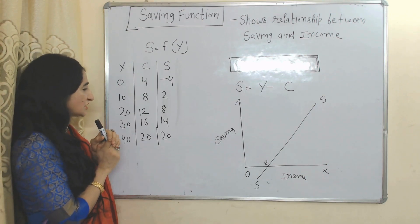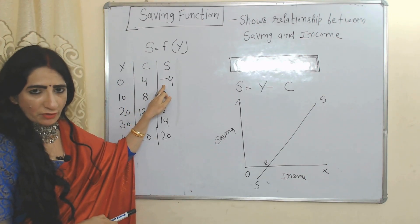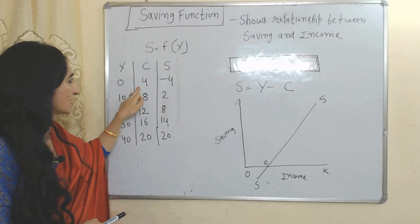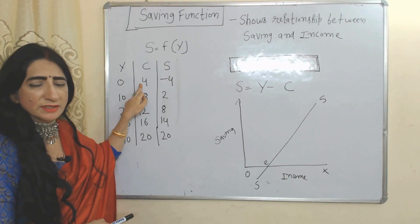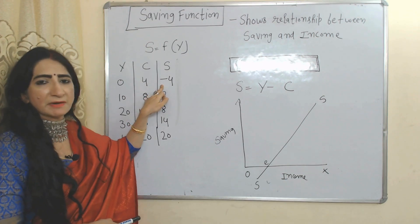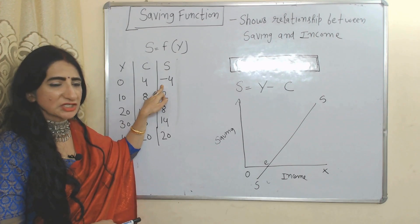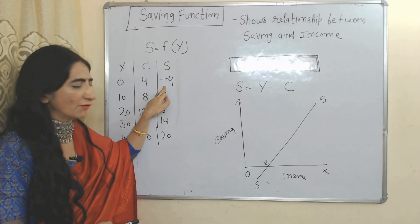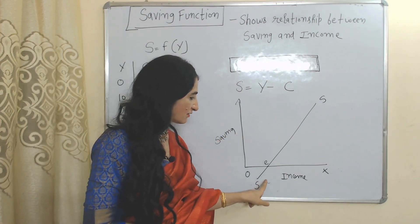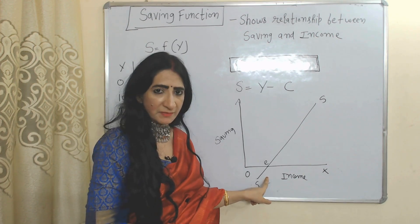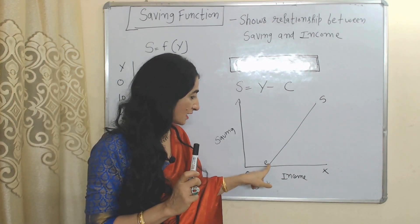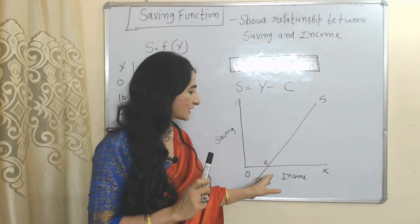Initially our saving is negative — this is because initially our income is zero but we are still doing autonomous consumption. For this autonomous consumption, we are using our past savings, which is why initially our saving is negative. On the x-axis is income and the y-axis is saving. Initially the saving curve goes negative because for doing consumption we are using our past saving.